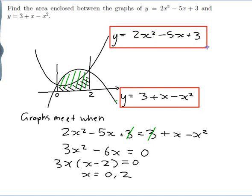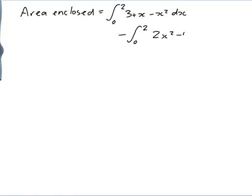So if I subtract those two areas I'll get the area I want which is the area between the two functions. The area enclosed is equal to the integral from 0 to 2 of 3 plus x minus x squared dx minus the integral from 0 to 2 of 2x squared minus 5x plus 3 dx.